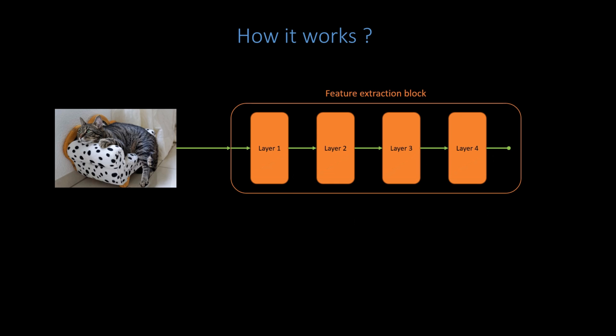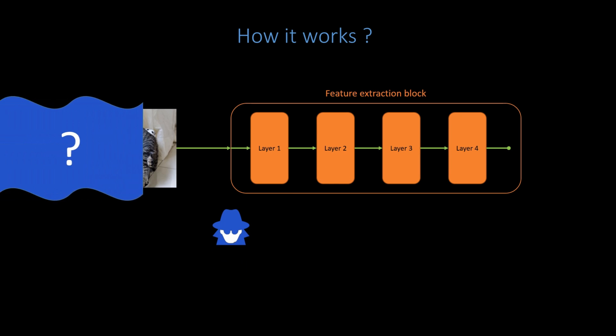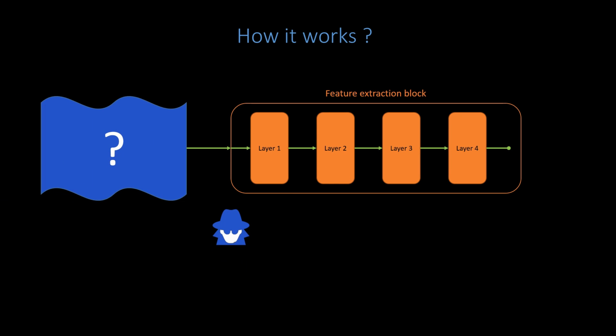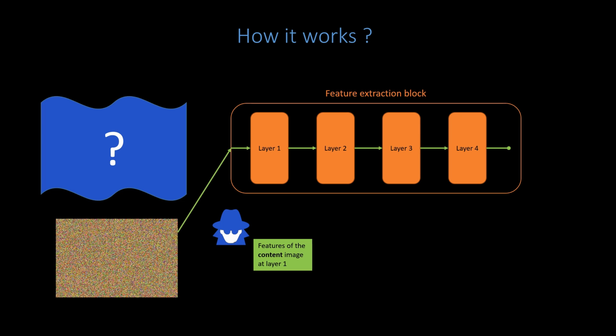Now, imagine there is a spy who doesn't have access to the input image, but he would like to guess its content. The only informations the spy has about that image are the features extracted at one given layer, let's say the first layer. Can the spy reconstruct the original image? To do this, the spy gives in random noisy images input to the net. The net extracts the features with his artificial image.